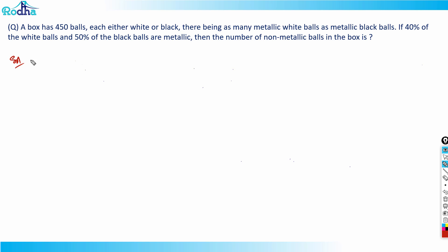Hi guys, let's see what is this question from CAT 2021 slot 2, a question from probability. The question says that a box has 450 balls, each either white or black, there being as many metallic white balls as metallic black balls. If 40% of the white balls and 50% of the black balls are metallic, then the number of non-metallic balls in the box is?